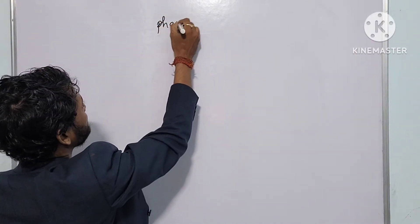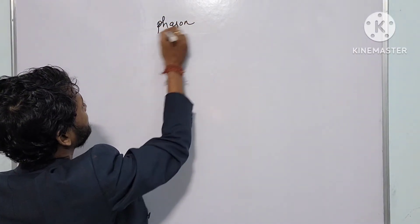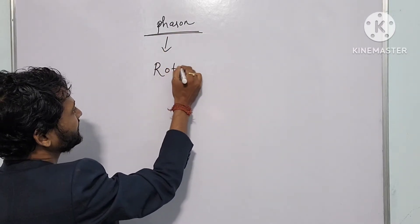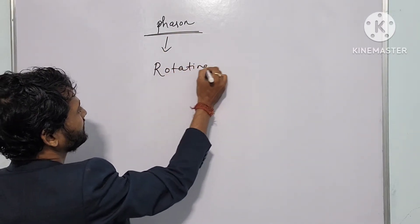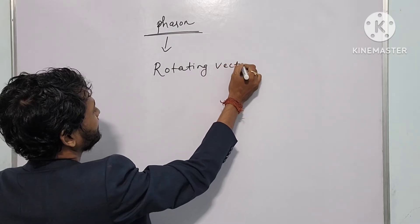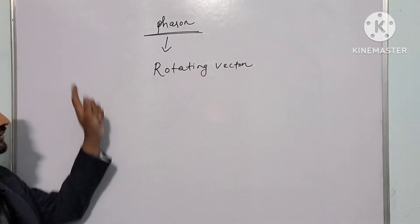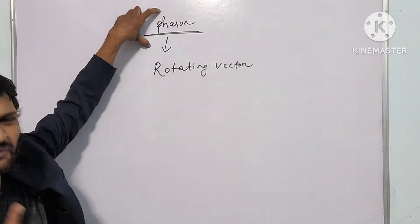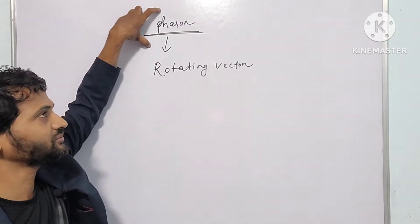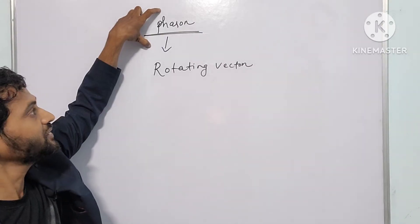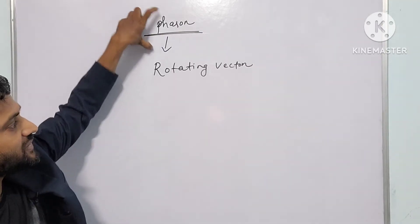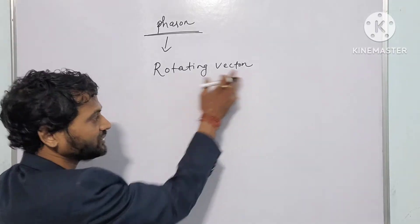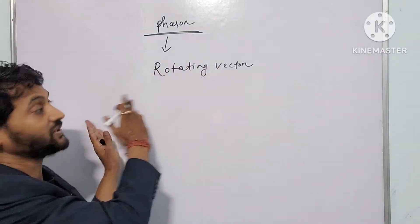Now we will talk about phasor. What is a phasor? Phasor is nothing but a rotating vector. Before going to the phasor part and how you represent a phasor in different forms — like trigonometric form, rectangular form, polar form — let me explain about vectors first, then you can understand by analogy what a phasor is.